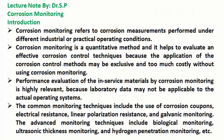Corrosion monitoring. Let's start with the introduction. Corrosion monitoring refers to corrosion measurements performed under different industrial or practical operating conditions. It is a quantitative method and helps to evaluate effective corrosion control techniques, because the application of corrosion control methods may be exclusive and too costly without using corrosion monitoring.